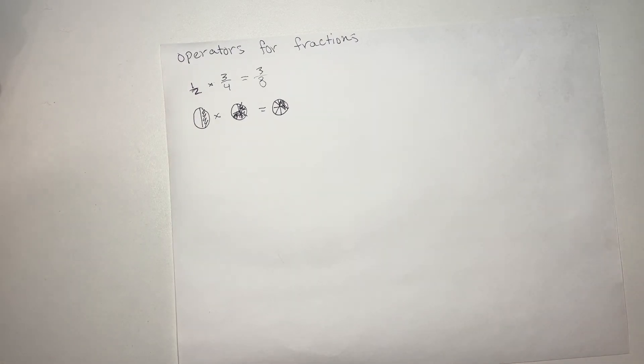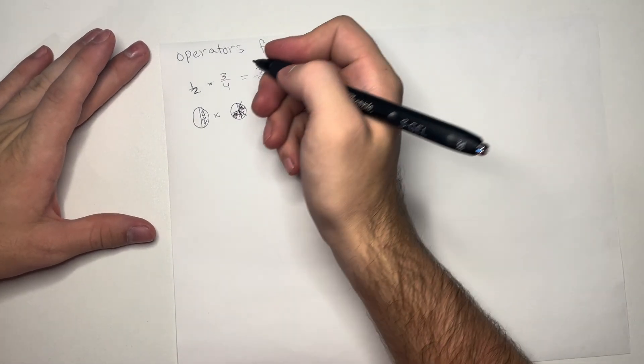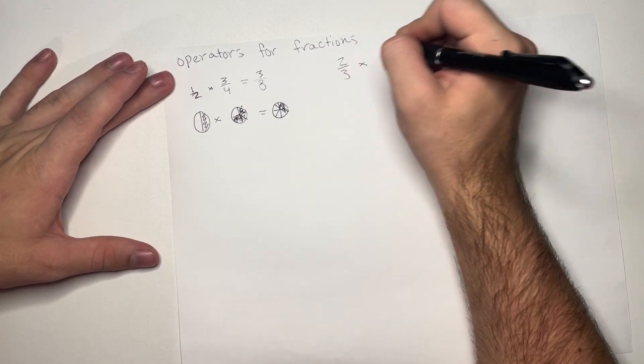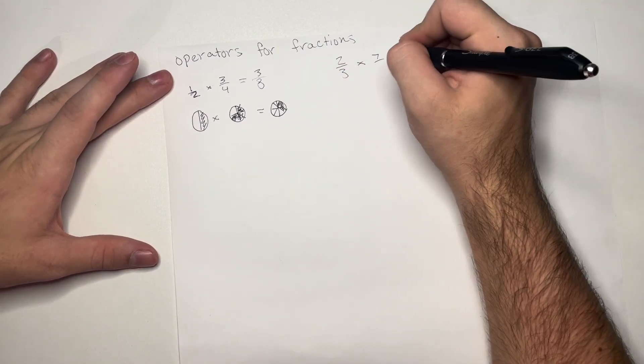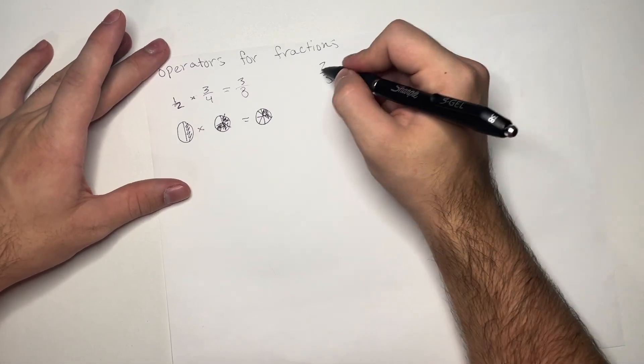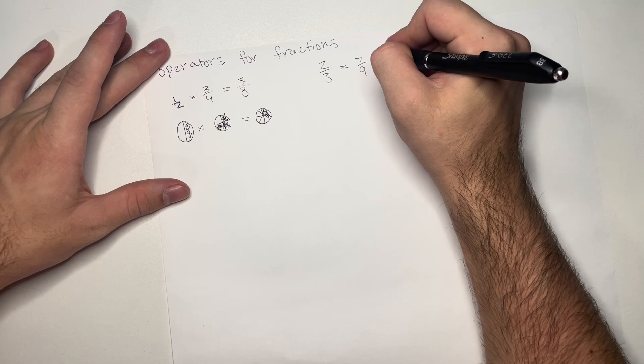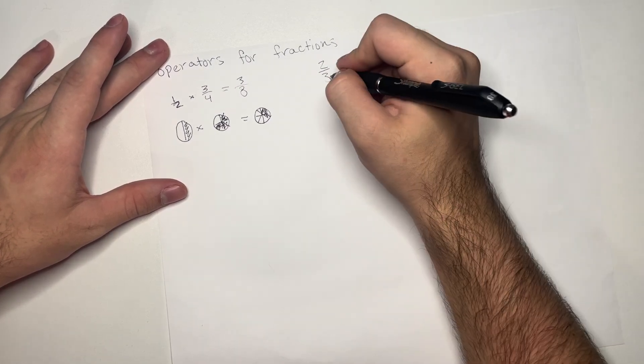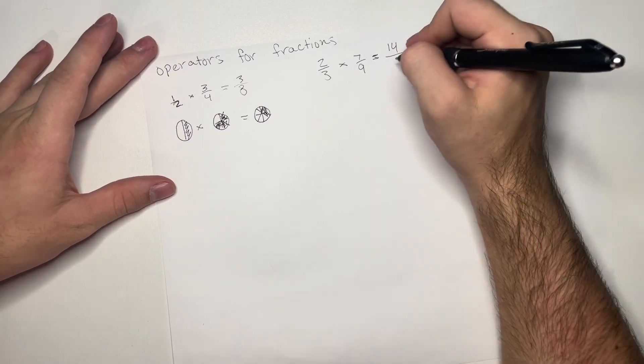Now, let's go ahead and do another example. We're going to take 2 thirds. And we're going to multiply this by 7 ninths. Here, again, we start by multiplying across. 2 times 7 is equal to 14. 3 times 9 is equal to 27.